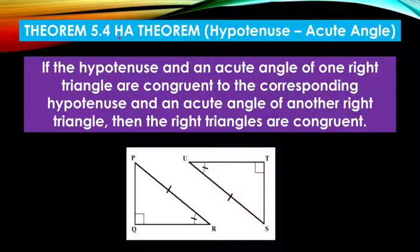Theorem 5.4 or HA theorem, hypotenuse acute angle. This means the mark of congruence is on the hypotenuse and on the acute angle. If the hypotenuse and an acute angle of one triangle are congruent to the corresponding hypotenuse and acute angle of another right triangle, then the right triangles are congruent.